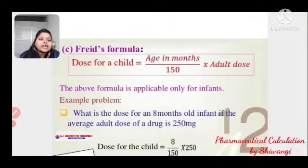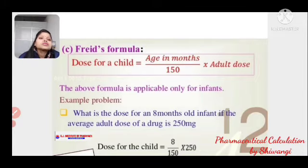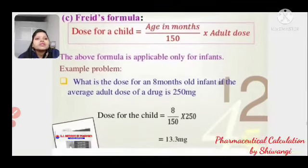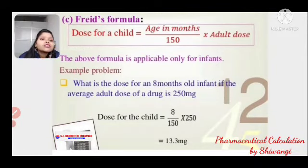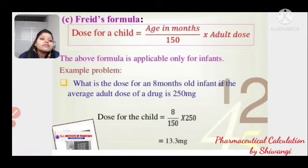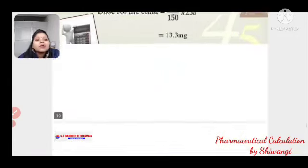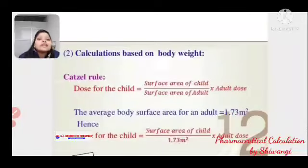Fried's formula is used for infants: Dose = Age in months / 150 × Adult dose. Example: Child age = 8 months, adult dose = 250 mg. Dose = 8/150 × 250 = 13.3 mg.